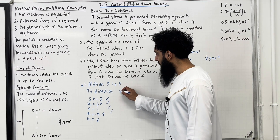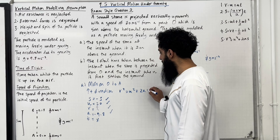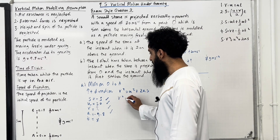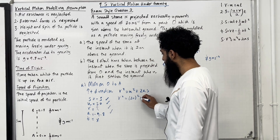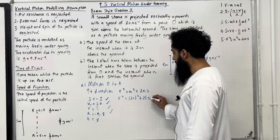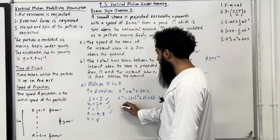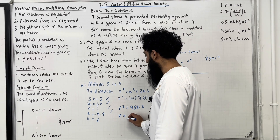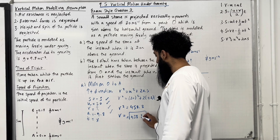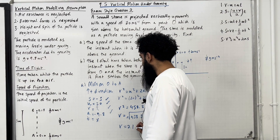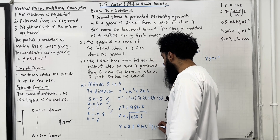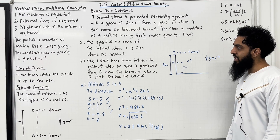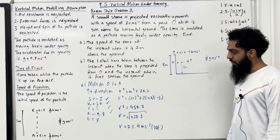Carrying out the substitution: v² = (20)² + 2(−9.8)(−3). So v² = 458.8. Taking the square root, v = 21.4 metres per second to three significant figures. So the speed of the stone at the instant when it is 2 metres above the ground is 21.4 metres per second.